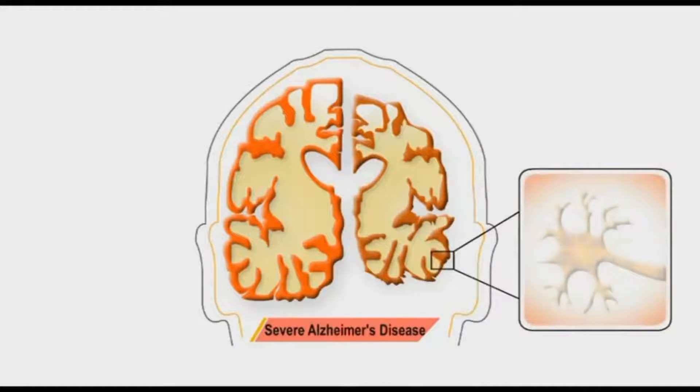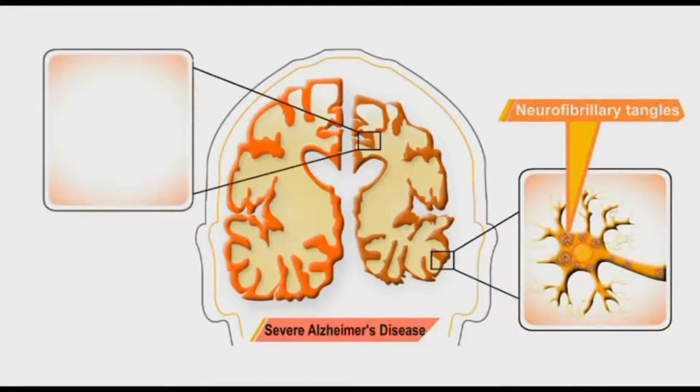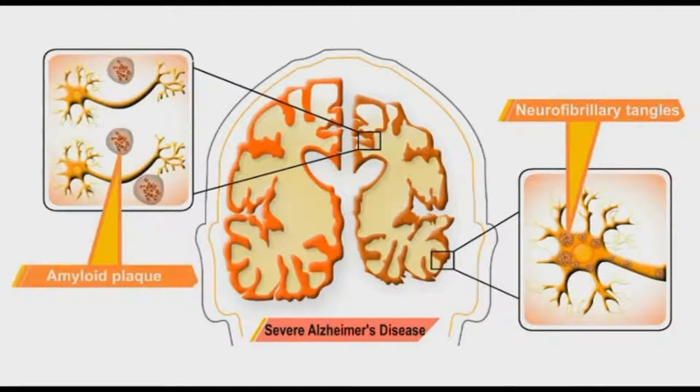There are two important findings in the brain of patients with Alzheimer disease: the neurofibrillary tangles inside the nerve cells and amyloid plaques between nerve cells.